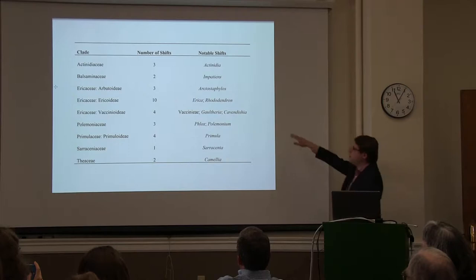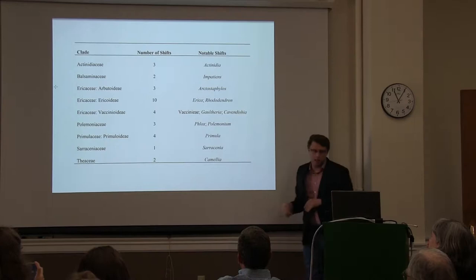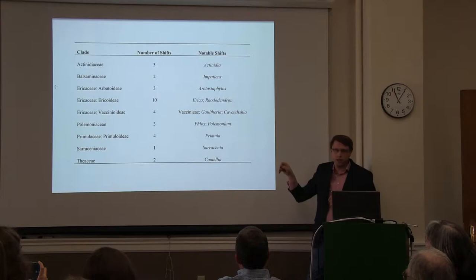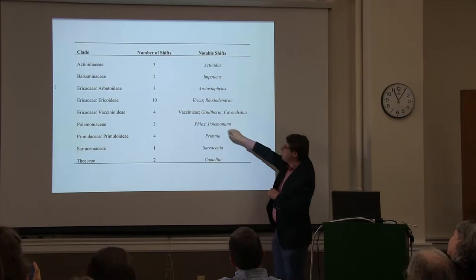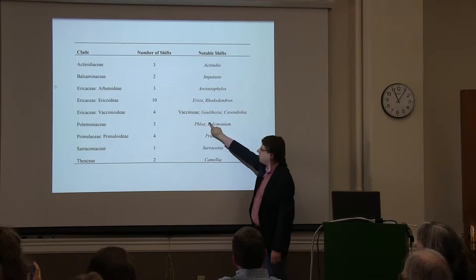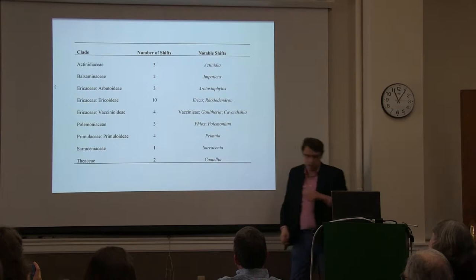A few of the more salient shifts in speciation rates include: kiwifruit Actinidiaceae, touch-me-nots, Arctostaphylos, the Manzanitas — a big group of about 100 species in California that are only about 2 million years old — Erica in South Africa, Rhododendron in East Asia, the South American blueberries which are a large group in the Andes. Polemonium is one shift in the increase in speciation rate. Primroses, pitcher plants, and tea all have increases in speciation rate as well.